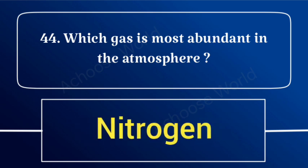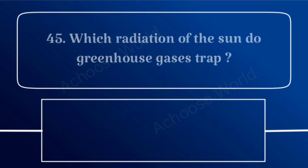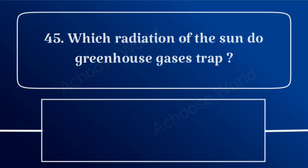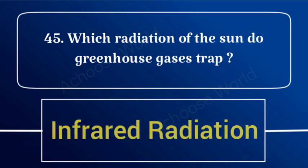Which gas is most abundant in the atmosphere? Nitrogen. Which radiation of the sun do greenhouse gases trap? Infrared radiation.